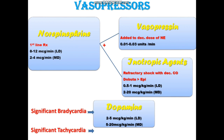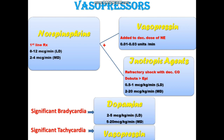If the patient has significant bradycardia, then dopamine is the first choice. The loading dose of dopamine is 2 to 5 micrograms per kg per minute and the maintenance dose is 5 to 20 micrograms per kg per minute. If the patient has significant tachycardia — sinus tachycardia more than 160 or fast atrial fibrillation — the first choice is vasopressin.